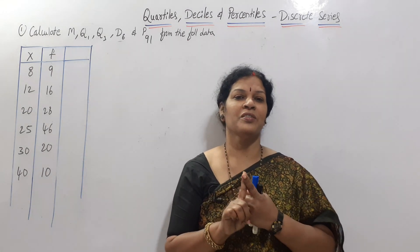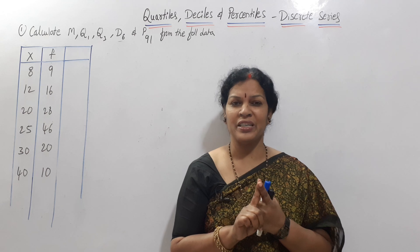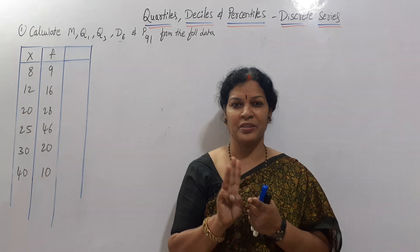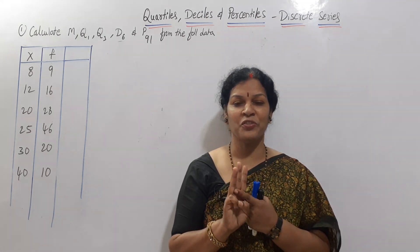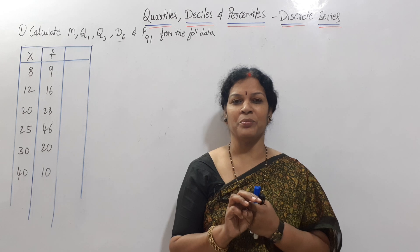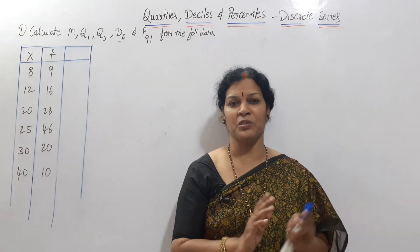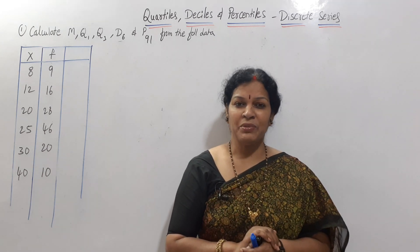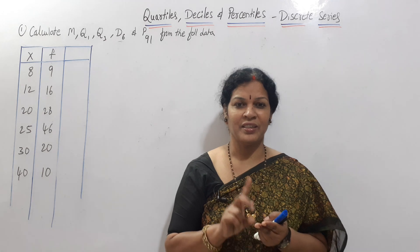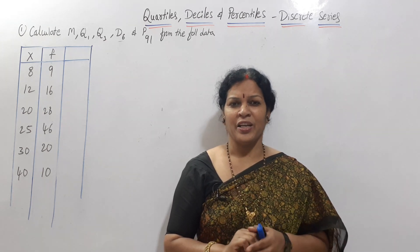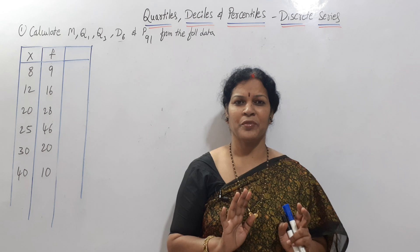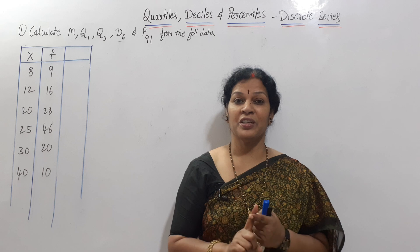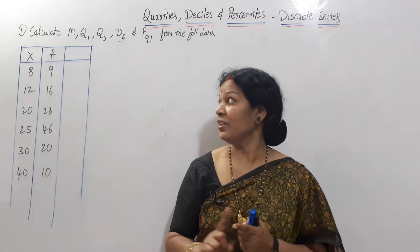Remember how we calculated median in discrete series? There were three steps: first, arrange given data X in ascending order; second, find cumulative frequency (CF); third, apply the formula: size of (N+1)/2 th item. This same formula applies for individual series too. For quartiles, deciles, and percentiles, formulas are the same — only the methodology changes slightly for discrete series.